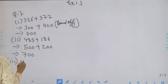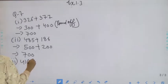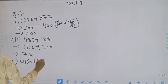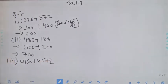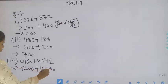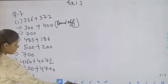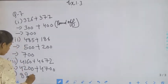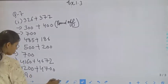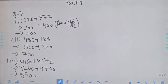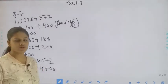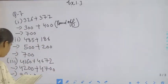Third part is 4160 and 4672. Students, round off: 4160 will become 4200 and 4672 will become 4700. So 4000 plus 4000 is 8000, and 700 plus 200 is 900, so the answer is 8900. We rounded 4160 and 4672 to the nearest hundred.